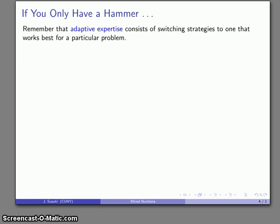Now, again, a quick reminder of this concept of adaptive expertise. You have adaptive expertise if you switch from one strategy to another, whichever works best for a particular problem. The difficulty is, if you only have one tool, you have to use it, no matter how painful it will be. If you only have a hammer, you've got to treat every problem as a nail.